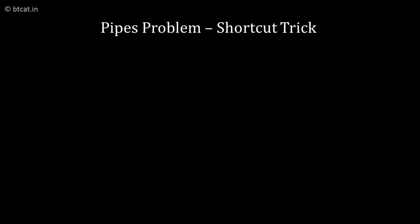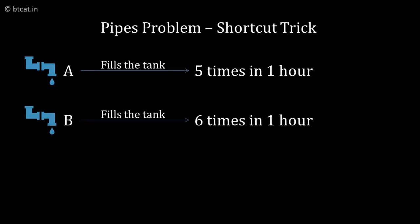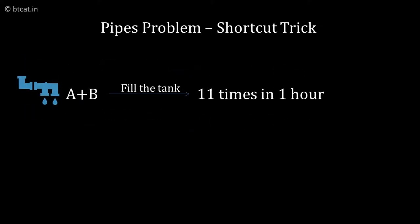There can be various methods of solving this, including equations. But I would like to tell you one very good shortcut trick. In one hour, pipe A will fill the tank five times. Pipe B, by the same logic, will fill six times in one hour. Together, A and B will fill 11 times - five plus six equals 11 times.